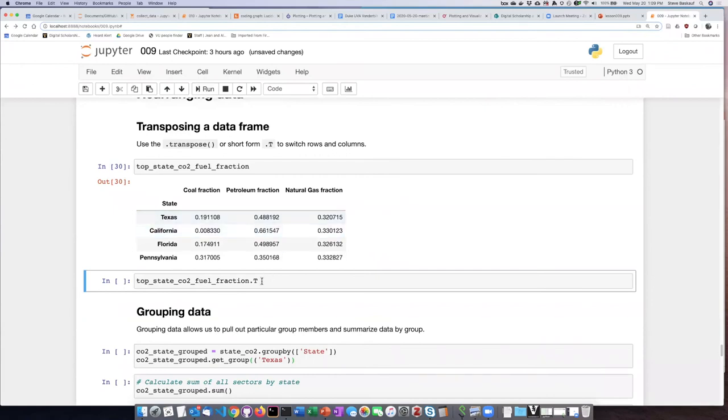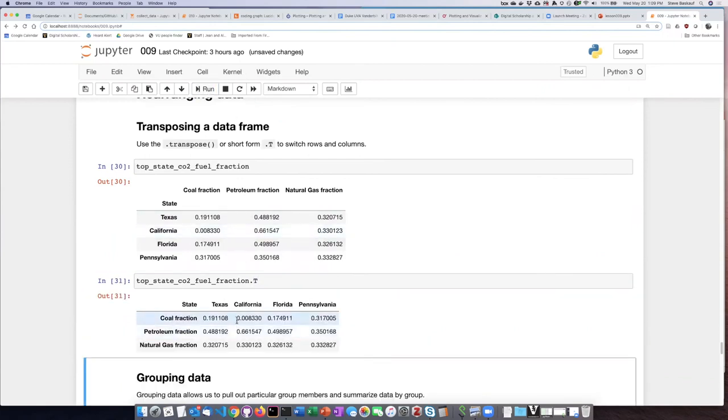If we perform the transpose function on it like this, then as I said, it simply flips the axes and turns the table around the other way.